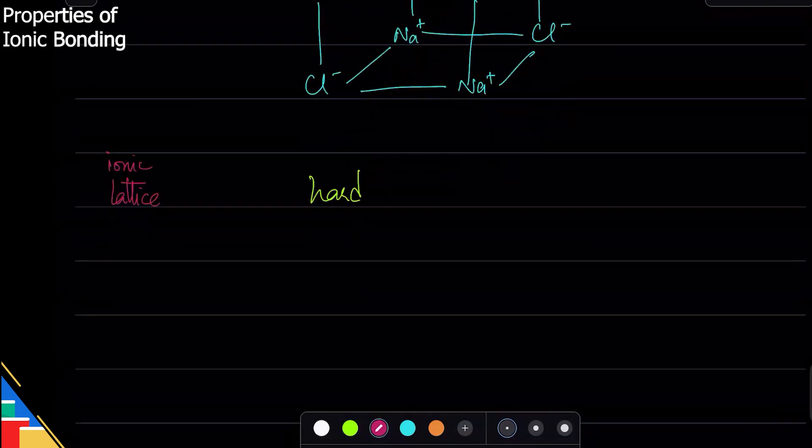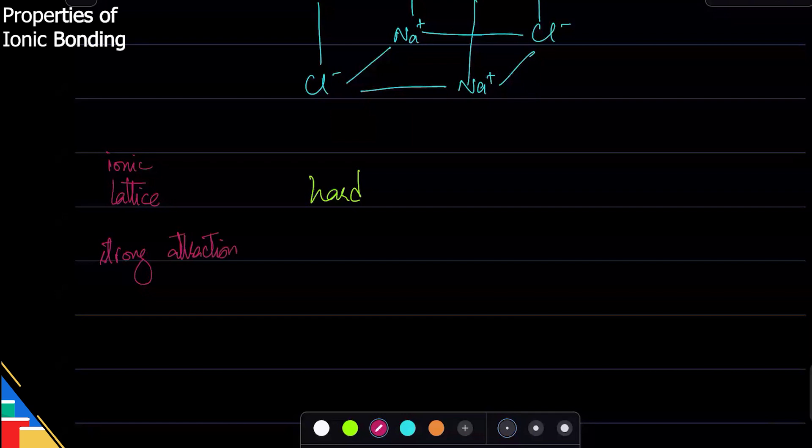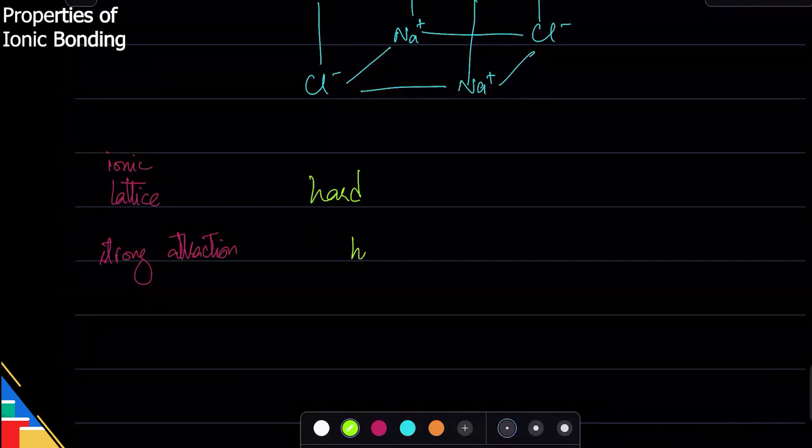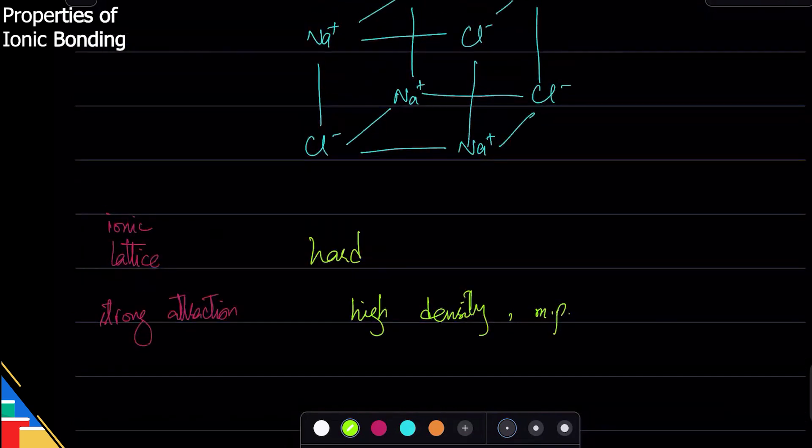Similarly, there is strong attraction. Because of that strong attraction, they have high density and high melting point. You need high energy to break the lattice, which is why it is like that. Notice there are no free electrons - either the electron is lost to the anion, or the atom has internal electrons.